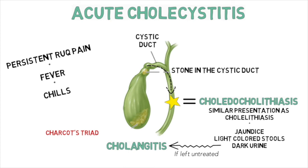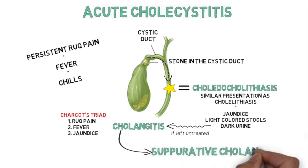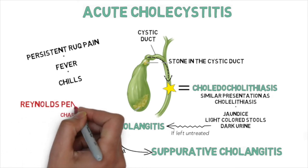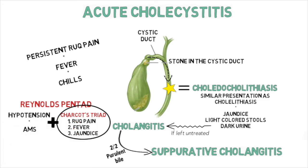Patients with cholangitis will present with Charcot's triad: right upper quadrant pain, fever, and jaundice. Cholangitis can progress to suppurative cholangitis if pus develops in the bile, characterized by Reynolds' pentad — Charcot's triad plus hypotension and altered mental status. Patients with cholangitis can deteriorate very rapidly and need to be diagnosed and managed in a timely manner.